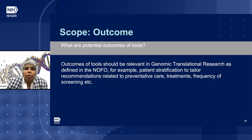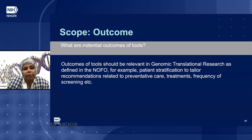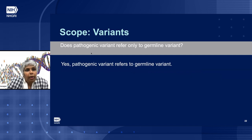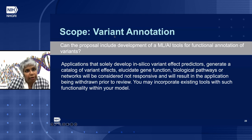What are potential outcomes of such tools? Outcomes should be relevant in genomic translational research as defined in the NOFO. Examples include patient stratification to tailor recommendations related to preventative care, treatments, and frequency of screening. Does pathogenic variant refer only to germline variants? Yes, it refers only to germline variants.